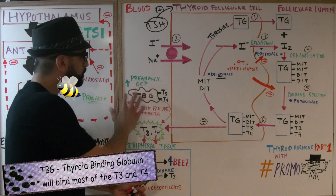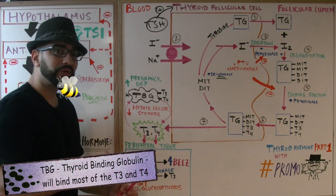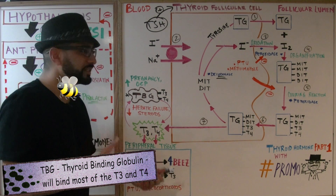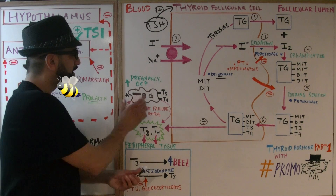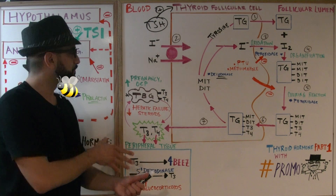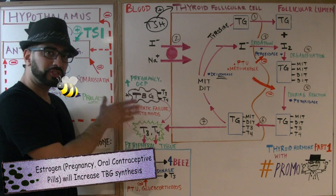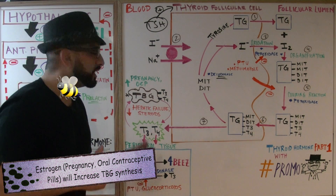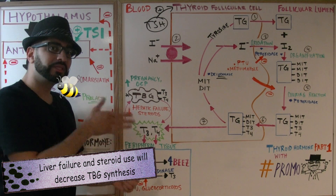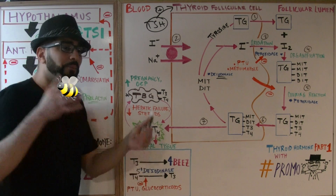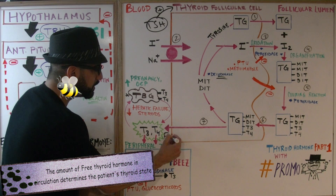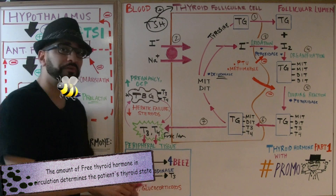Step 7 is the release of T3 and T4. Once released, most of it will be bound by TBG — thyroid binding globulin. When bound to TBG, it's not active at all. A couple of things increase TBG synthesis: pregnancy and oral contraceptive pills are both high-estrogen states. Hepatic failure and the use of steroids will decrease TBG synthesis.